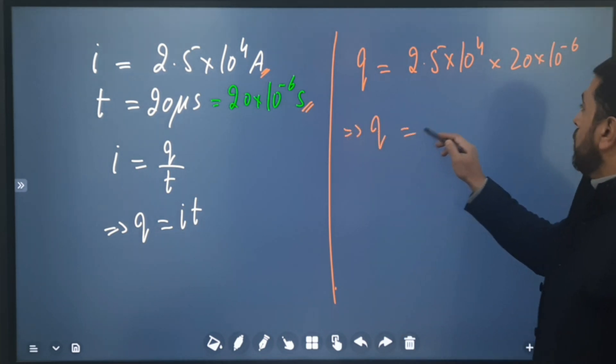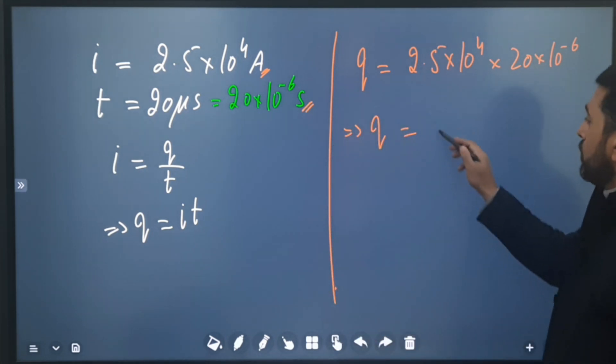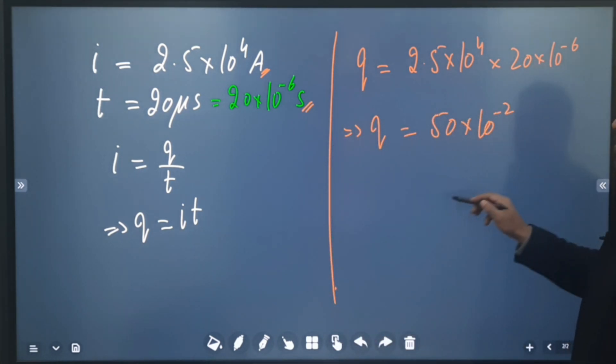So this implies Q is equal to—now this I have worked out already—is 50×10^-2, or Q equals 0.5 Coulomb.